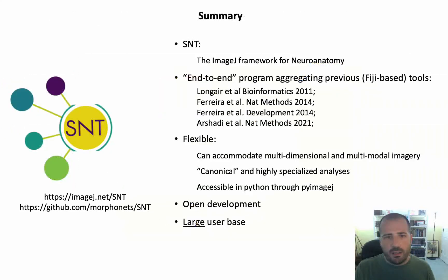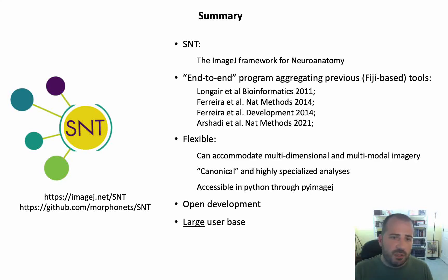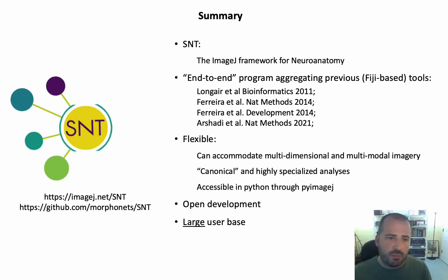As a summary, we have established SNT as a complete framework for neuroanatomy that aggregates several tools that before existed scattered across Fiji. It is flexible — flexible in terms of the imagery it can handle, flexible in terms of the type of analysis it can perform, from very simple single-cell morphometrics to more complex whole-brain connectomics, and flexible in terms of accessibility, as it can be used outside Fiji via PyImageJ. It is truly open source, has now a large user base, and is currently the most cited open-source software for 3D neuronal reconstructions.